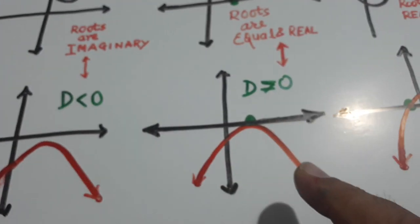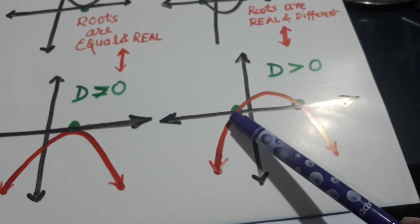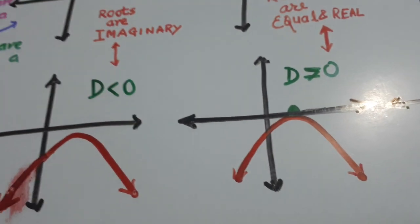D is equal to 0, it is touching at 1 point. And it is now touching at 2 points. D is greater than 0. So, two roots are there. Thank you.